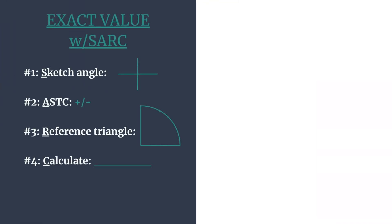Here's our SARC method outlined. This is just to help us keep all of our steps organized and to ensure we get an accurate final answer. S will sketch the angle's terminal side. A will use ASTC to decide which trig functions are positive in each quadrant, and thus if our exact value should be positive or negative for its final answer. R is for the reference triangle — we'll find the reference angle, the special right triangle, and coordinates that pair with it. And C will calculate our trig ratio.